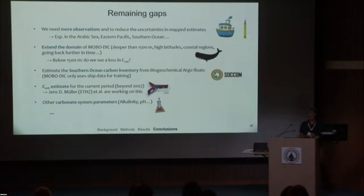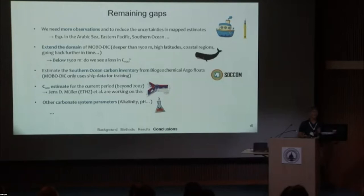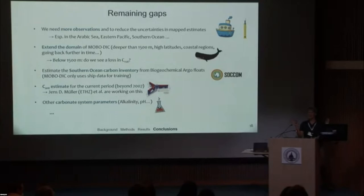The C_ant estimate I've used was scaled to our current period, and it would be great to really compare this to the current period — something Jens Müller at ETH is currently working on. Eventually, it would also be good to look at other carbonate system parameters like alkalinity and pH to really understand the whole carbon cycle as a system. With that, I'd like to thank you and look forward to questions and discussions over coffee during the week.